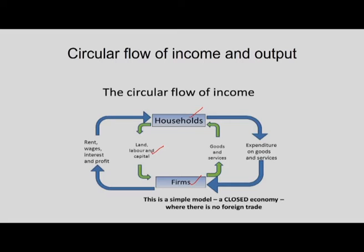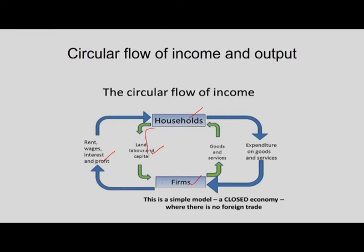For these productive services, households receive rewards in the form of rent, wages, interest and profits. So households provide land, labor and capital to the firms, and in return the firms provide rent, wages, interest and profit to the households. As a rule, households do not spend all their incomes on consumption — they save some part of their income to meet exigencies.